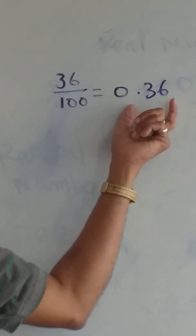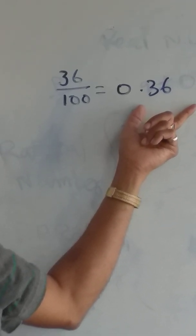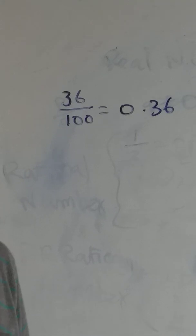What type of decimal expansion is this? It is terminated and non-recurring. So we call this a rational number.